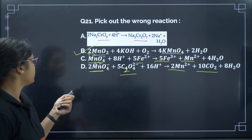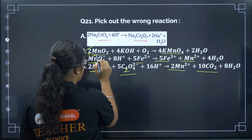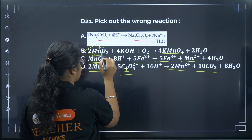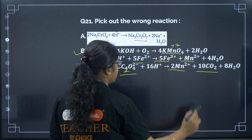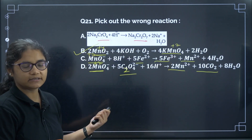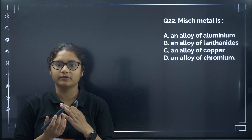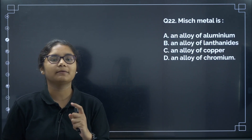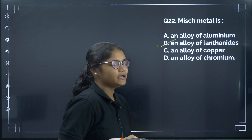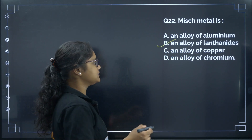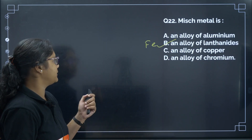In that reaction, manganese has an oxidation state of +4 and is undergoing oxidation to +7, but there is no reduction reaction present. Question 23: Misch metal is an alloy of all the lanthanoids. The correct answer is option B. One transition metal with a major composition in misch metal is iron, which you should also remember.